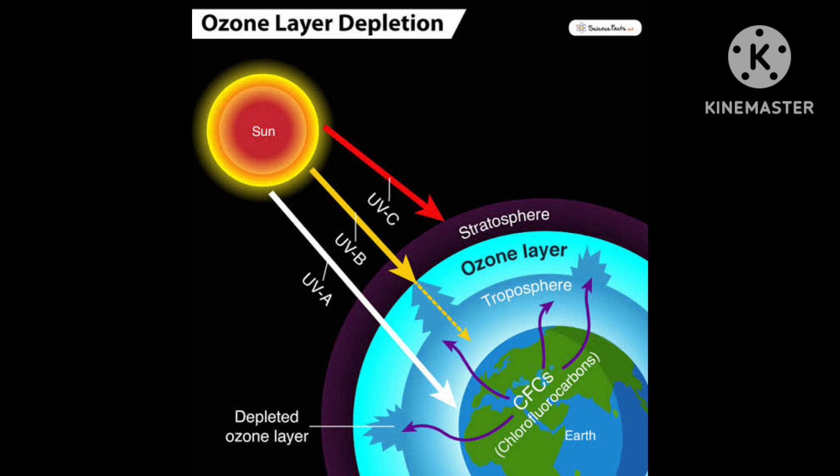Increased UV radiation also increases evaporation of surface water through the stomata of leaves, decreasing the moisture content of the soil. It damages paints and fibers, causing them to fade faster. UV light is very energetic — more so than visible light — and damages sensitive parts of all living organisms.